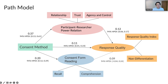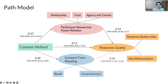To further understand the underlying mechanism, we built a Bayesian structural equation model to see how the consent form delivery method interacts with consent form reading, the participant-researcher relation, and survey response quality. The model suggests potential paths where the chatbot-delivered consent form increases response quality through a better participant-researcher power relation. This pathway suggests that the informed consent process could not only help participants make an informed decision, but also serve as a treatment to improve study quality.